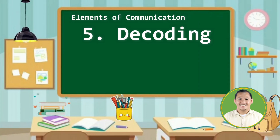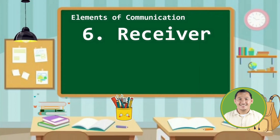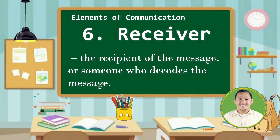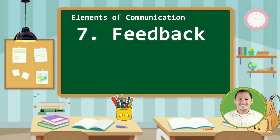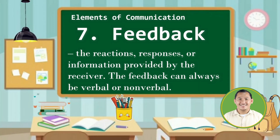Number five, decoding. Decoding is the process of interpreting the encoded message of the speaker by the receiver. Number six, receiver. The receiver is the recipient of the message — he or she is someone who decodes the message. Number seven, feedback. Feedback is the reaction, the response, and information provided by the receiver. The feedback can always be verbal or non-verbal.